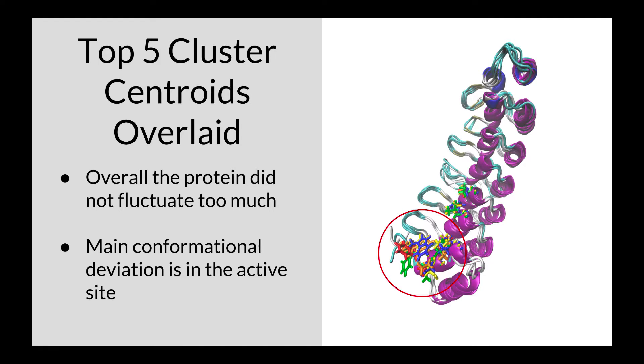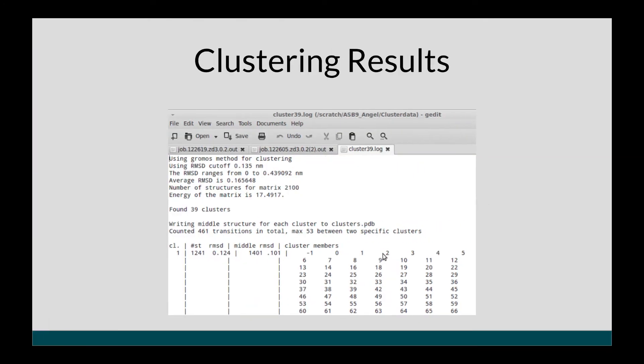Here are the structures of the top five cluster centroids overlaid. As you can see, these centroids are very similar to one another. The average RMSD for all five centroids is 0.165 nanometers or 1.65 angstroms.